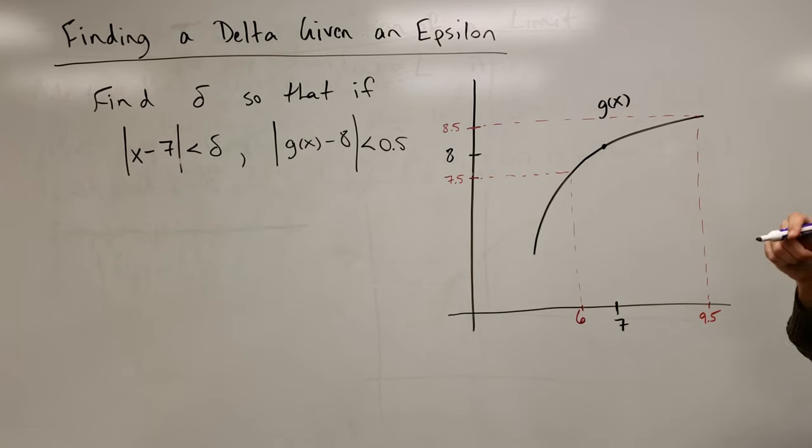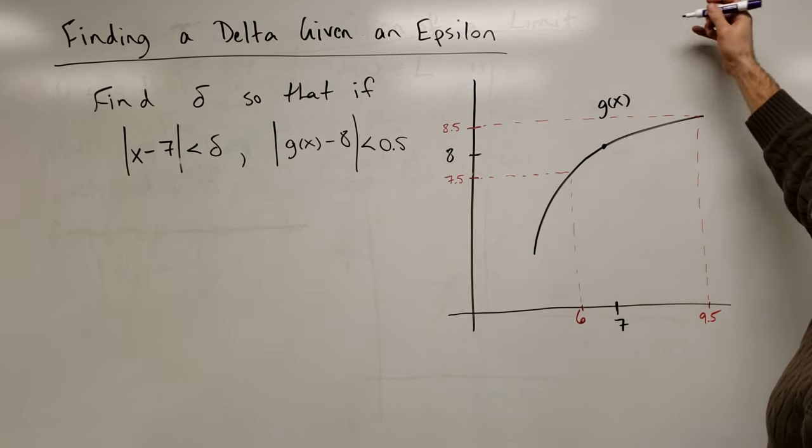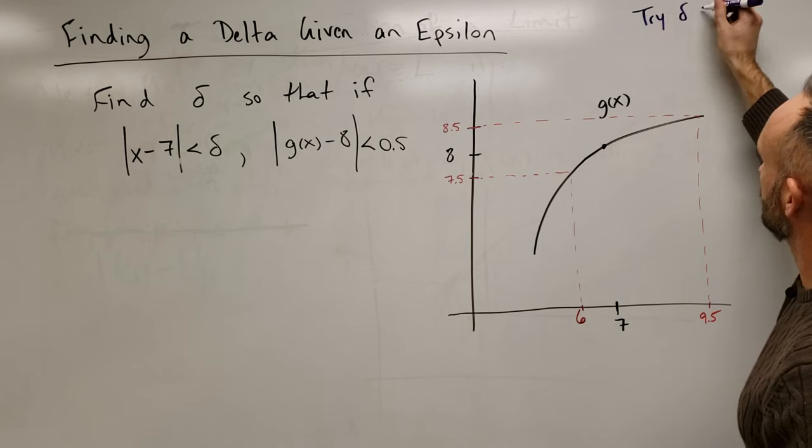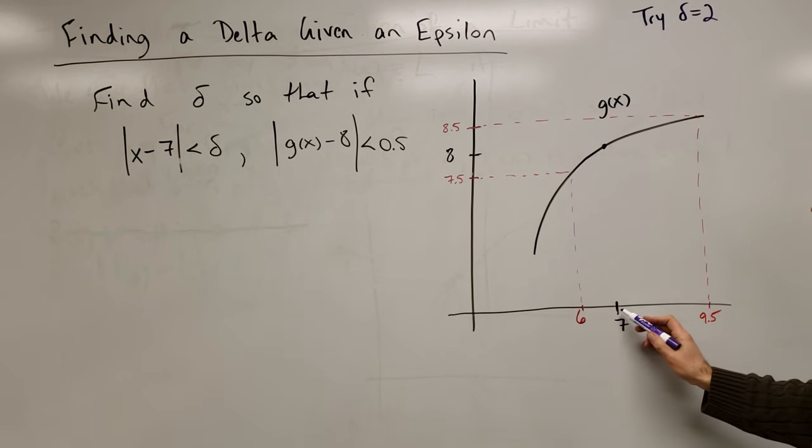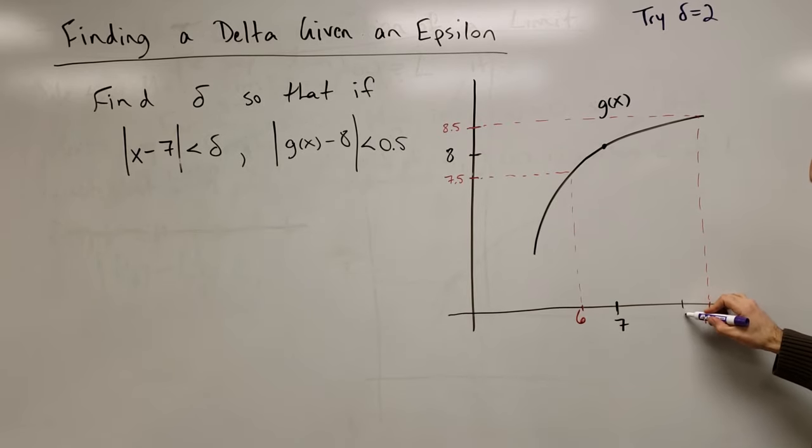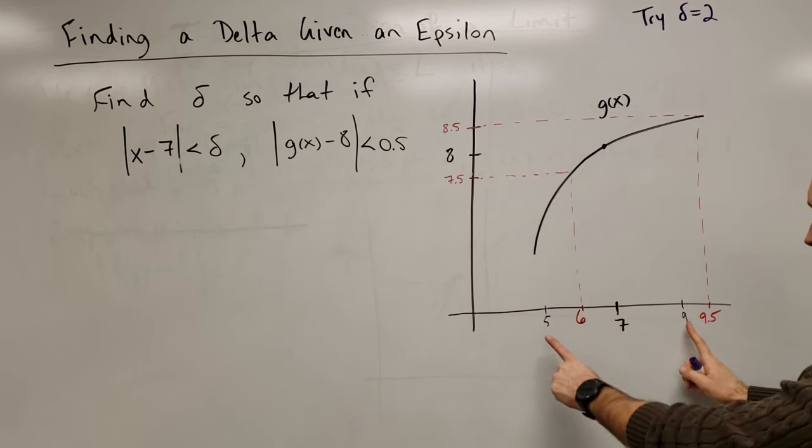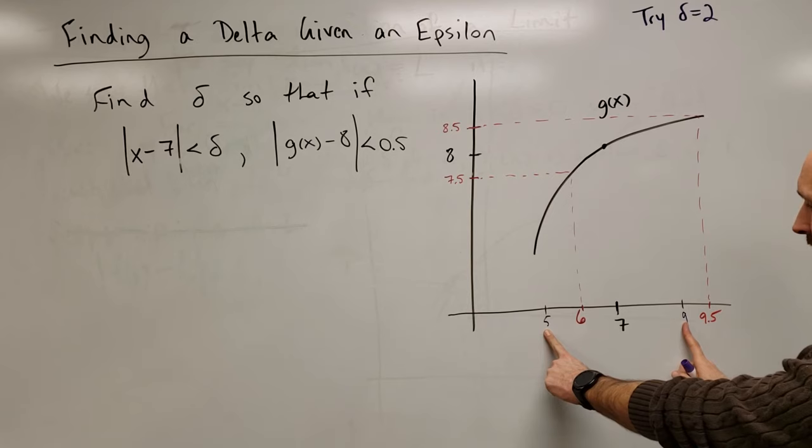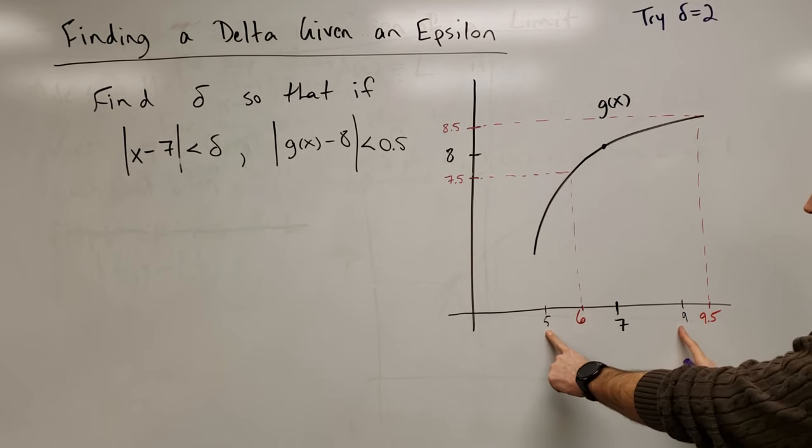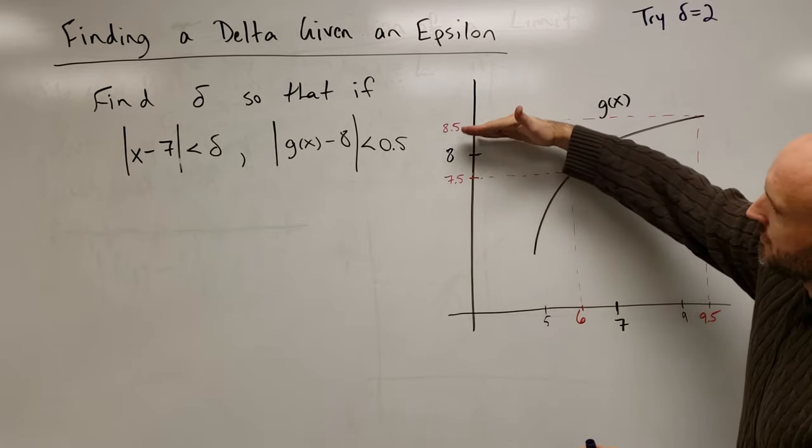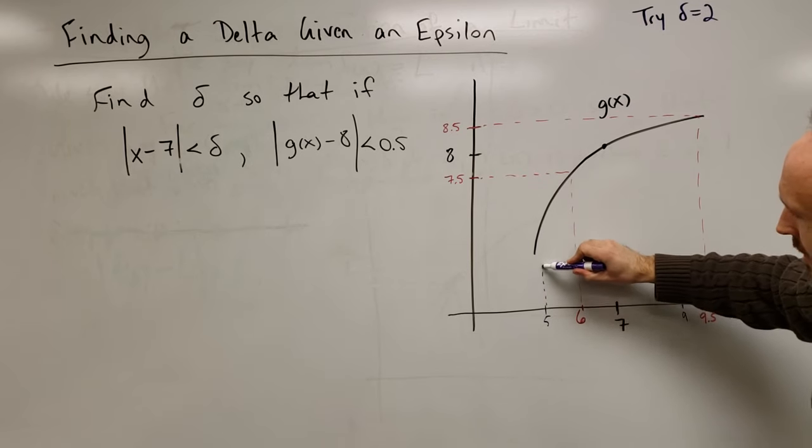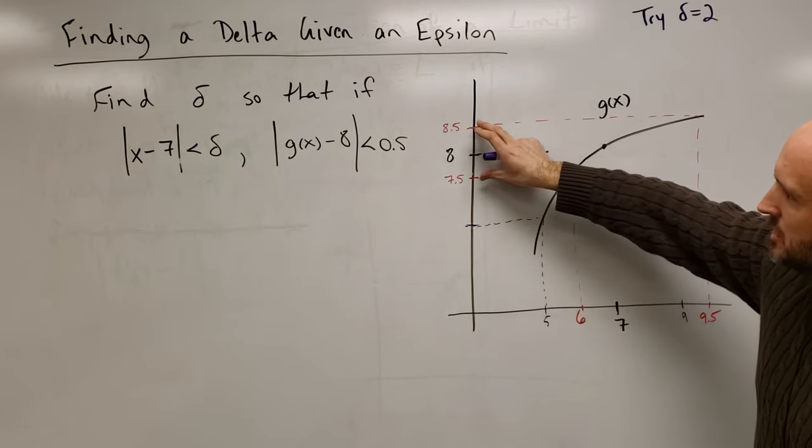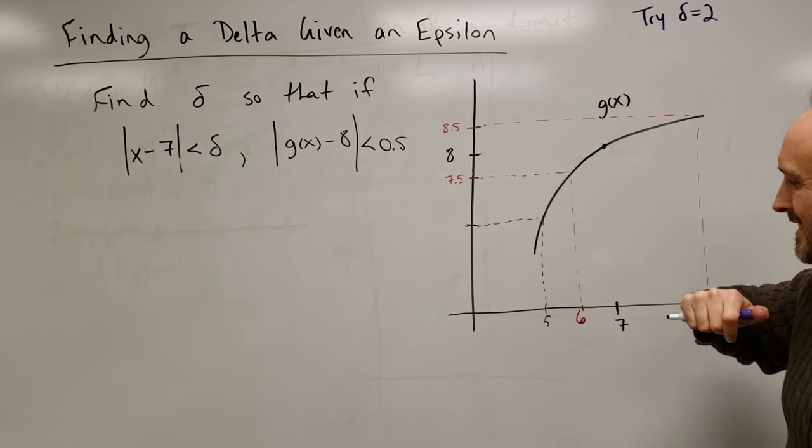So, for example, let me just give an example. Let's try a delta value of 2. If I chose delta to be 2, then all of the x values that are within a radius of 2 from 7, it would have to go out here to 9 and down here to 5. Every x value in here, between 5 and 9, would have to have their y value between 7.5 and 8.5. I hope you can see that that fails. Look at the x value of 5. Its y value is right here. It's outside of this 0.5 radius around 8. That's not going to work.